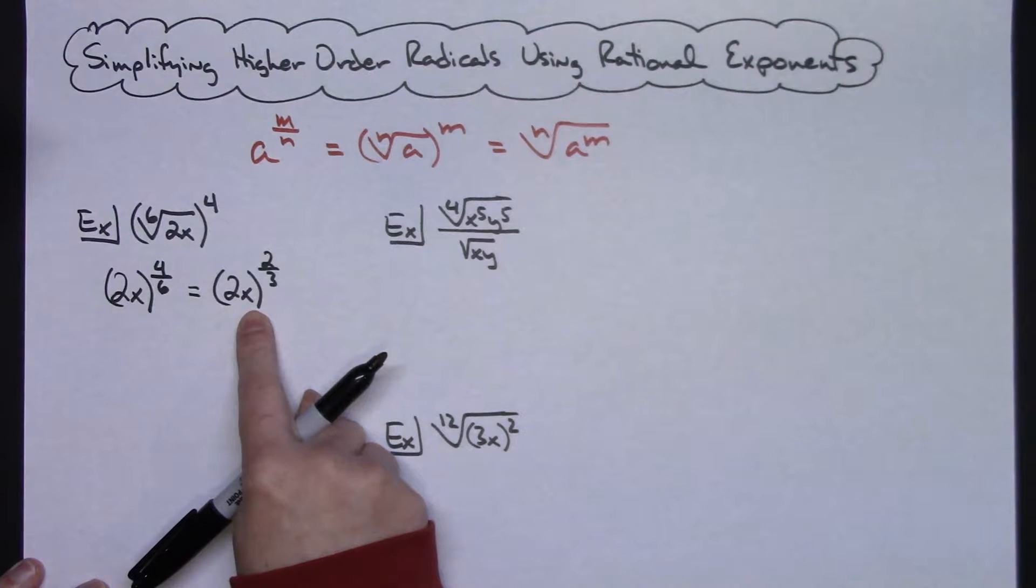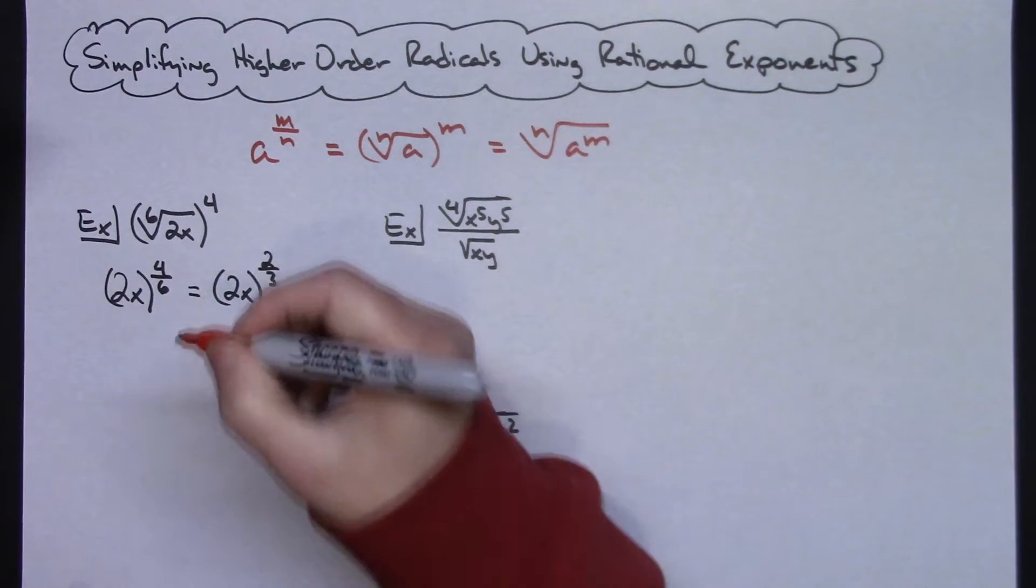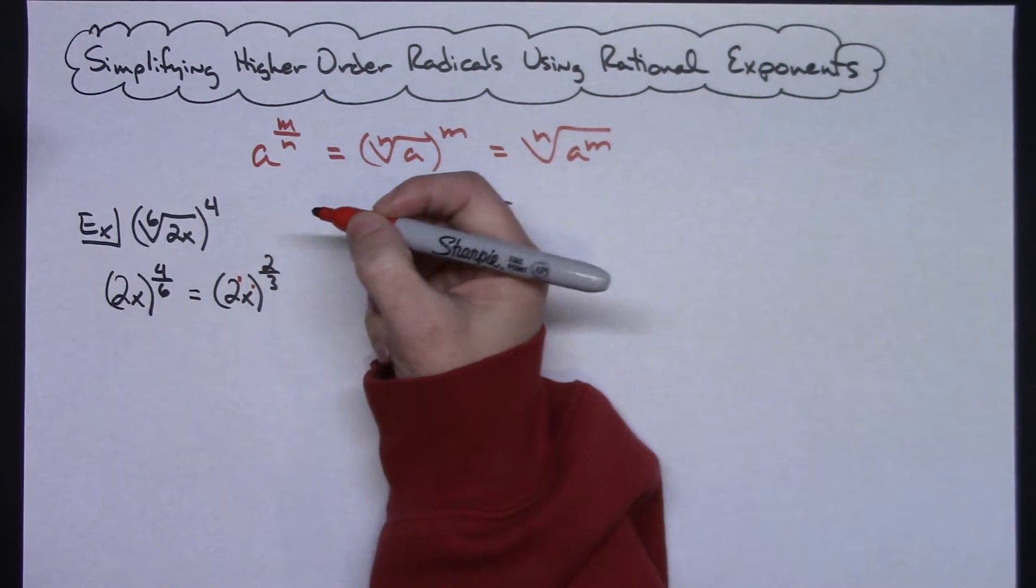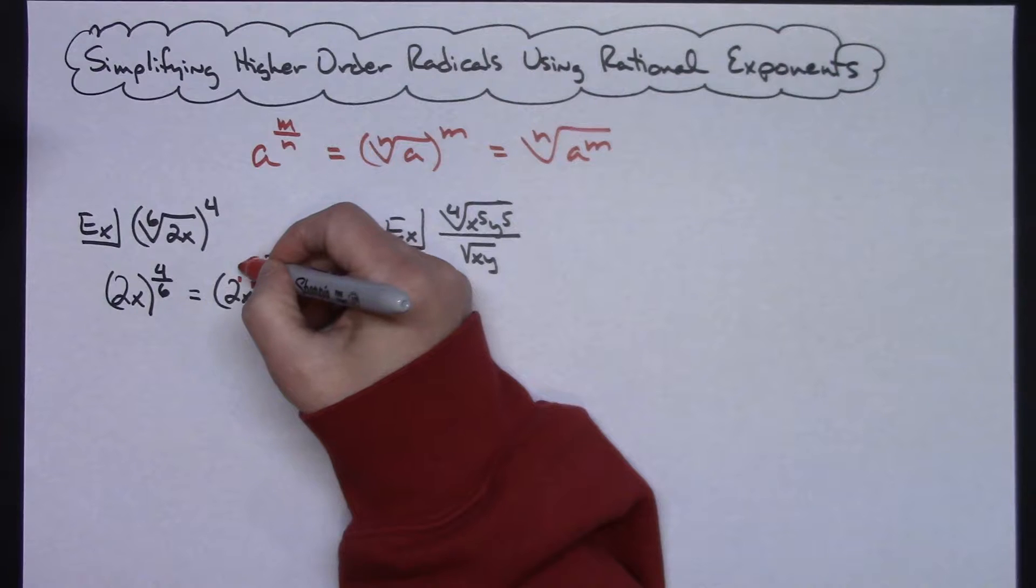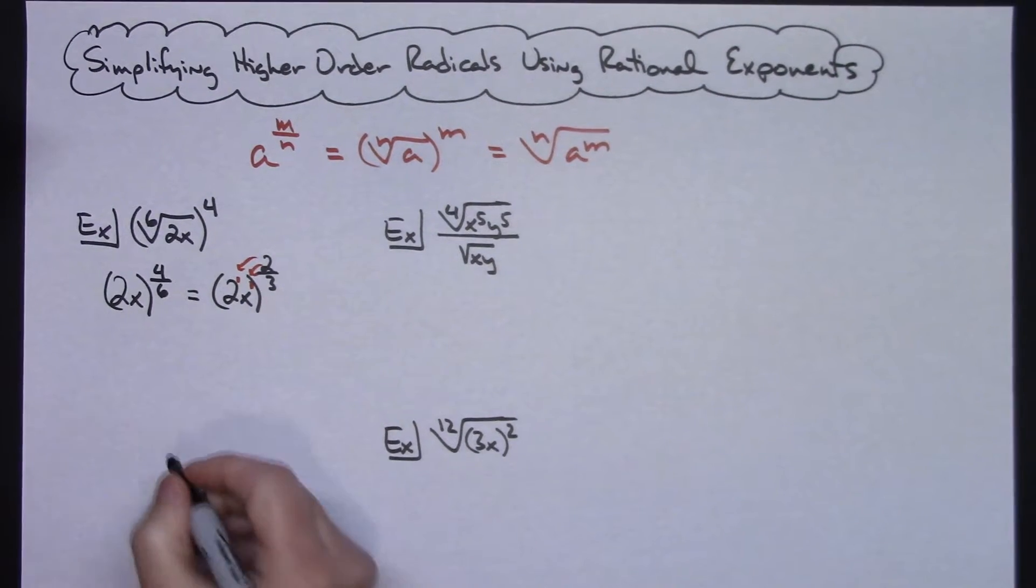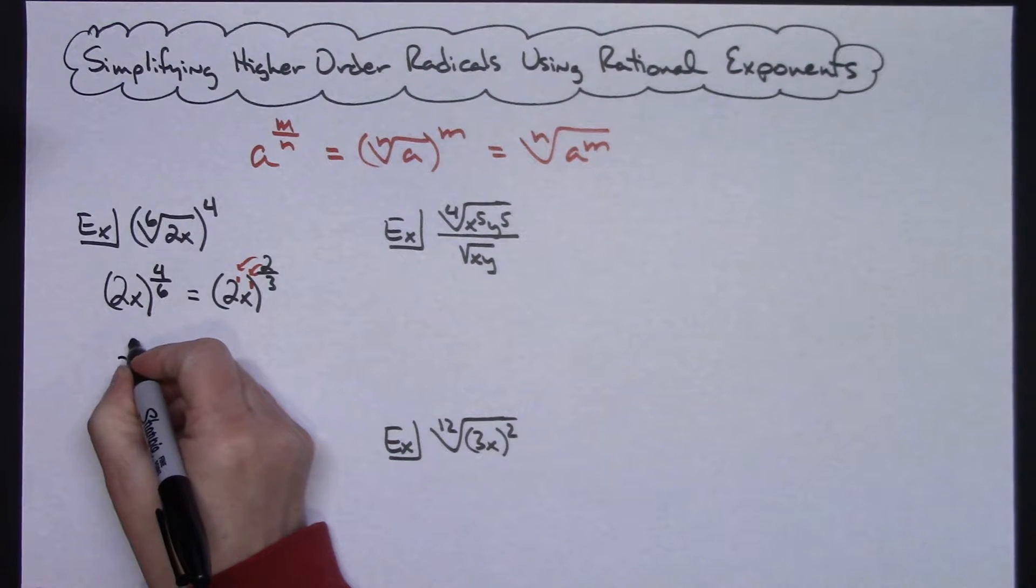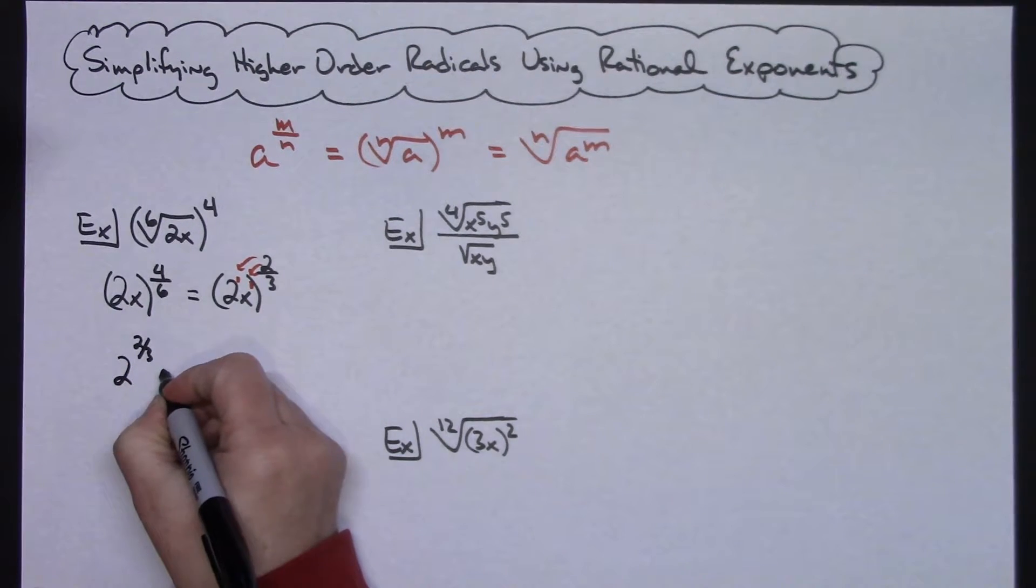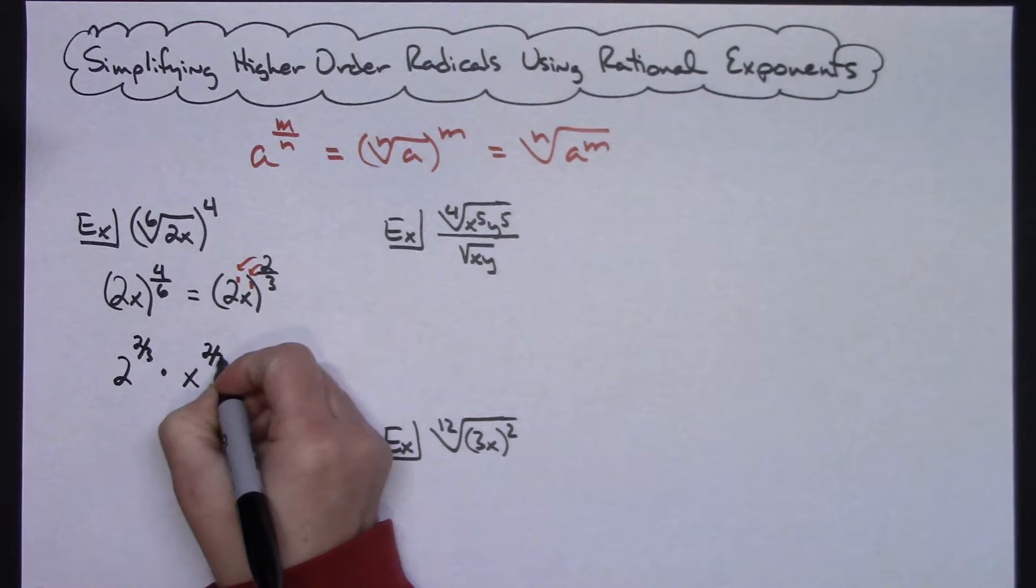Now I'm going to take this and remember my power raised to a power rule. Each one of these have a little imaginary one next to them as their exponent. So I'm going to do a power raised to a power. So then I would have 2 raised to the 2/3 times x raised to the 2/3.